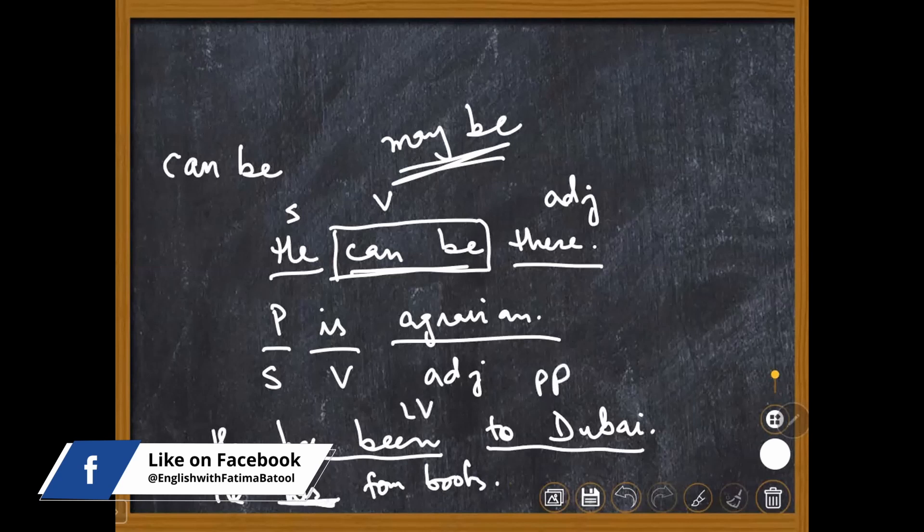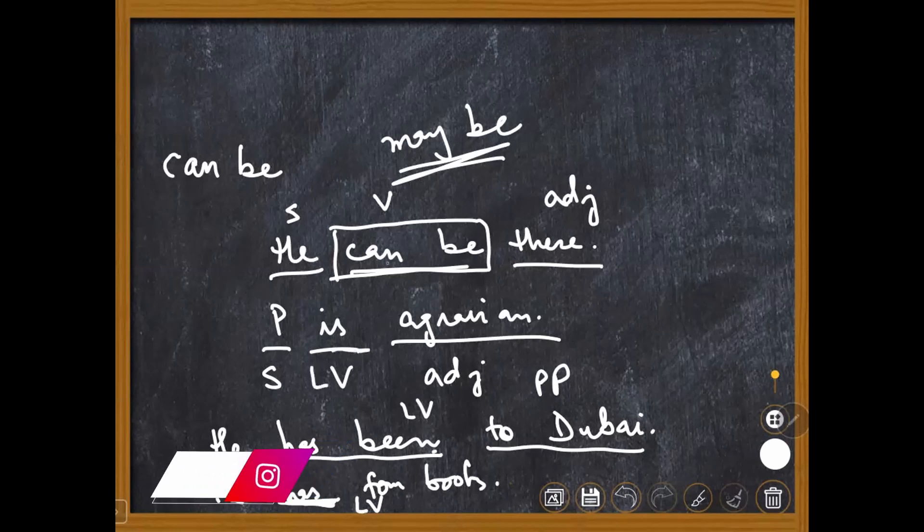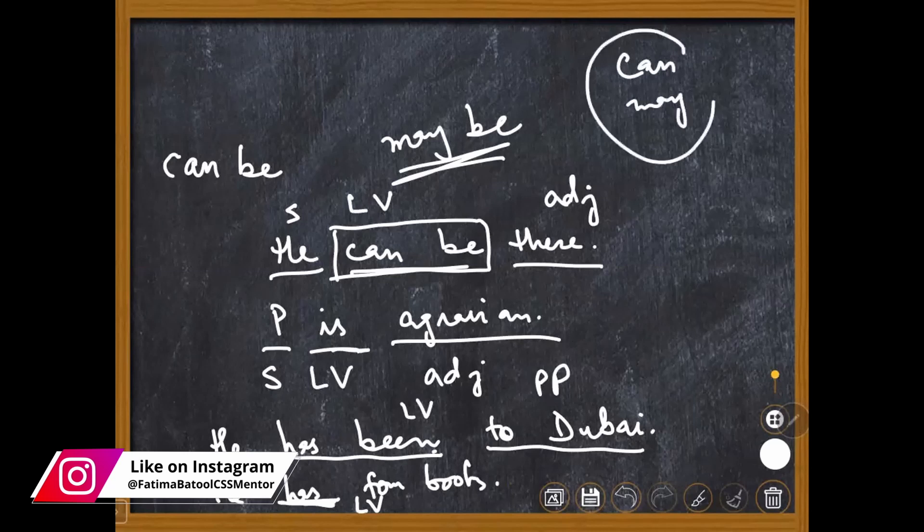Has been is a linking verb, is is also a linking verb, can be is also a linking verb. But can and may alone are not linking verbs. It is necessary to think about it.